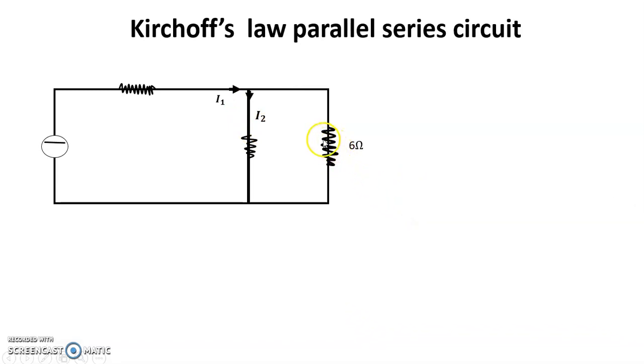Now I just find out the equivalent resistance. This is 6 ohm, and this is V2. V2 value is 3 ohm, V3 is 6 ohm. V2 resistance is 3 ohm.